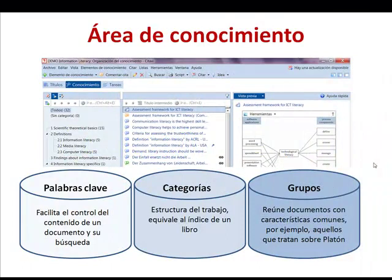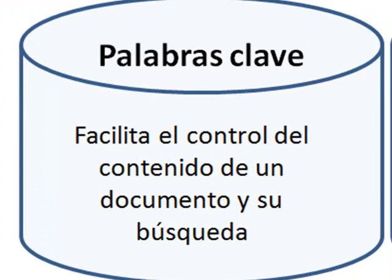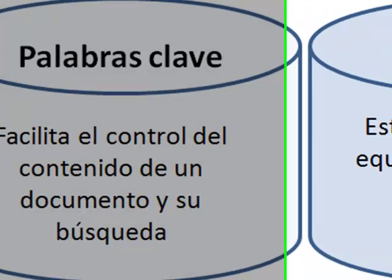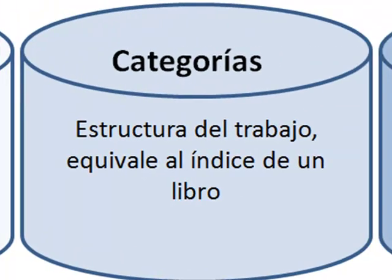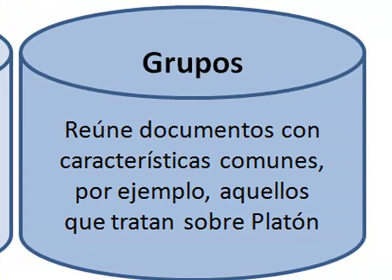When we develop our work, we need to structure the knowledge by keywords, categories, and groups. The keywords facilitate the control of the content of a document and its search. The categories structure the work, equivalent to the index of a book, and the groups reunite documents with common characteristics — for example, those books that are about Plato.